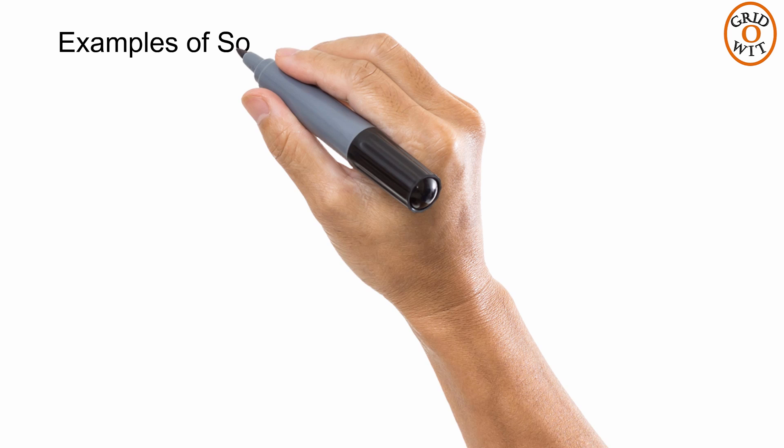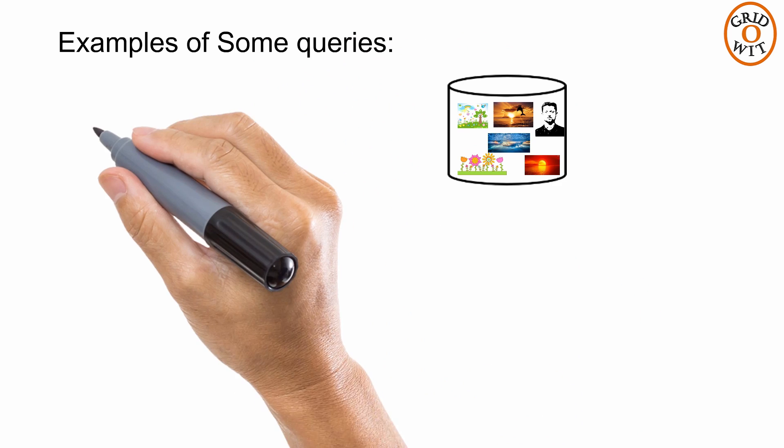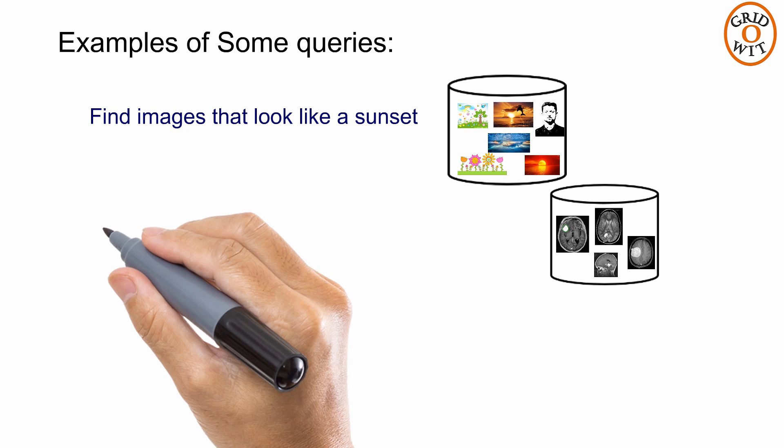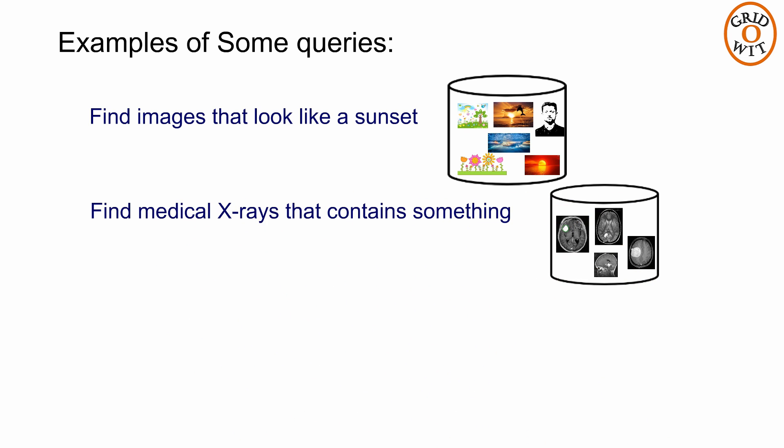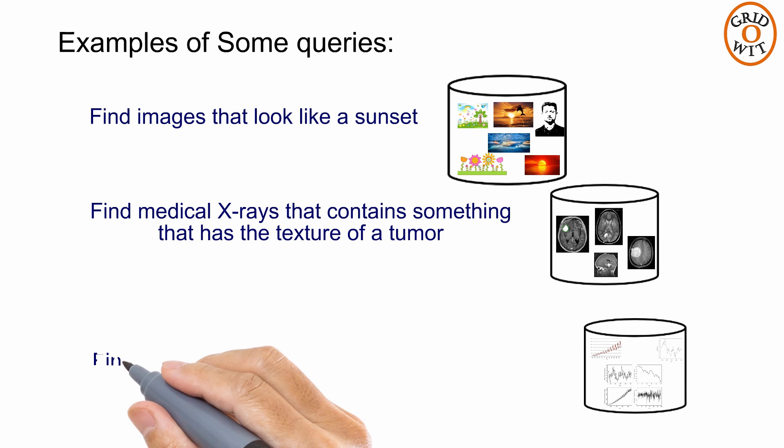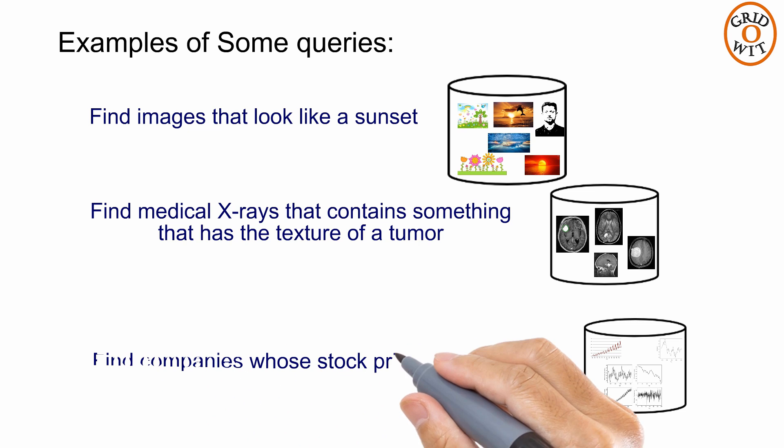In such databases, typical queries would be like: find images that look like a sunset, or find medical x-rays that contain something that has a texture of tumor, or find companies whose stock prices move similarly, etc.